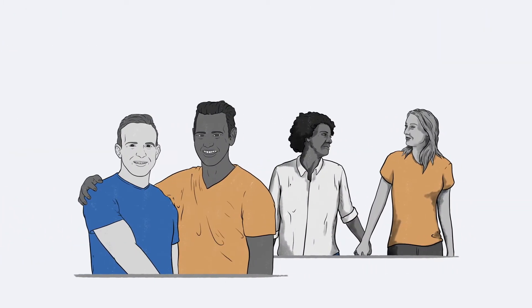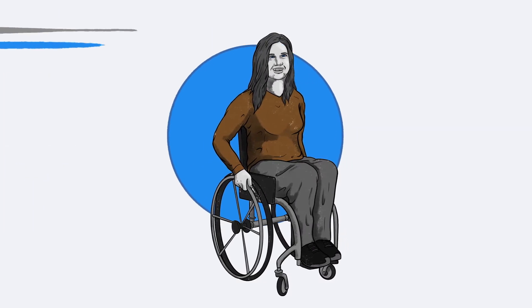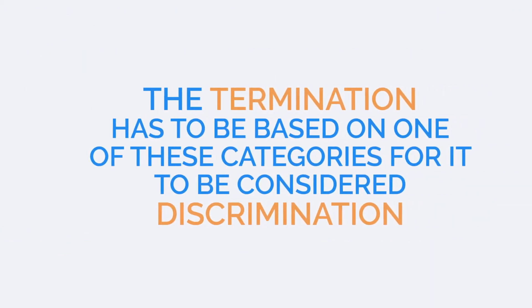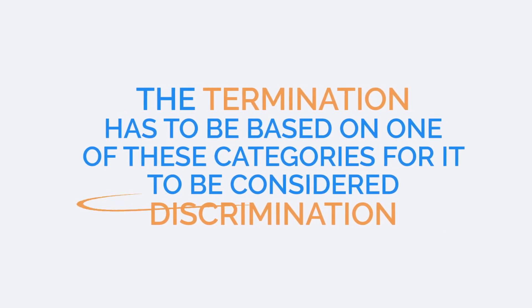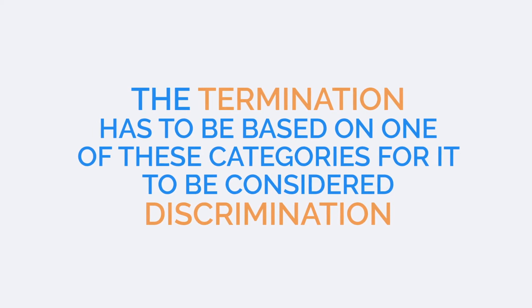Your sex, sexual orientation, gender identity, race, color, or national origin, disability, religion, or creed. The termination, or other negative action your boss takes against you, has to be based on one of these categories for it to be considered discrimination.